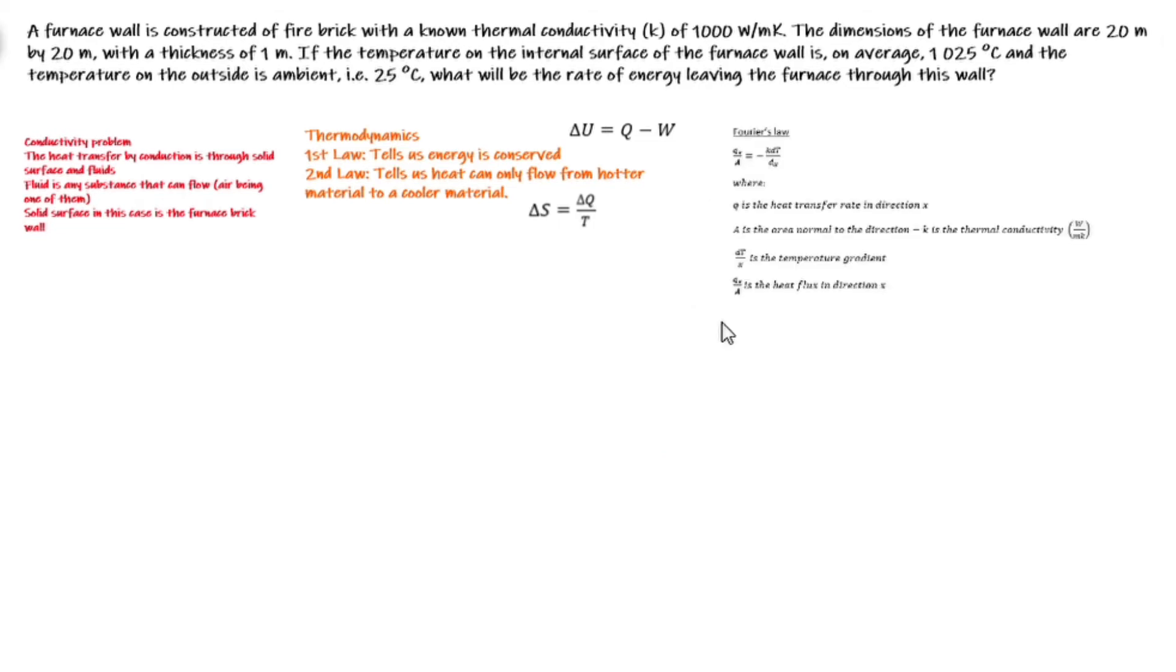We are given the thermal conductivity as 1000 watts per meter Kelvin. The negative sign means that the heat flows in a direction negative to the temperature gradient.